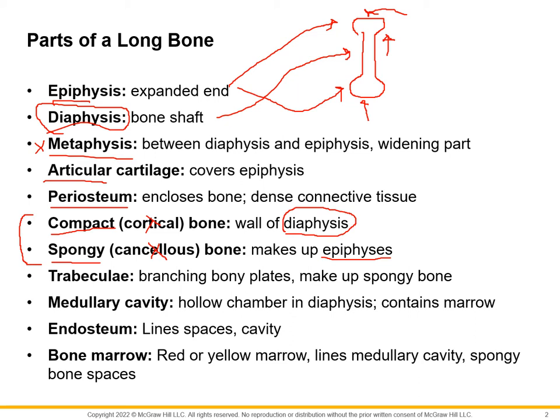In spongy bone, the webbing of the bone is called trabeculae, which literally means webs — these bony sponge-like plates. Inside the diaphysis there's a hollow cavity called the medullary cavity, which contains yellow bone marrow, a storage area for fats and minerals. The medullary cavity is lined by spongy bone on its inner surface.